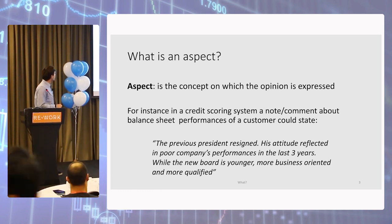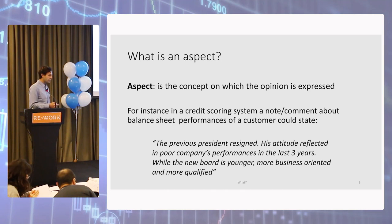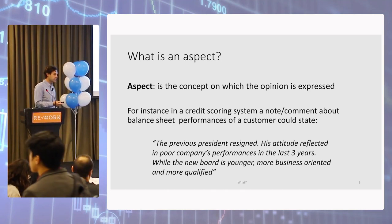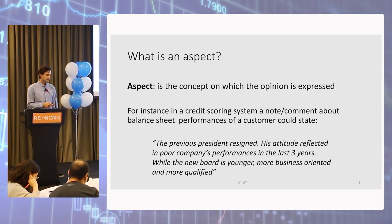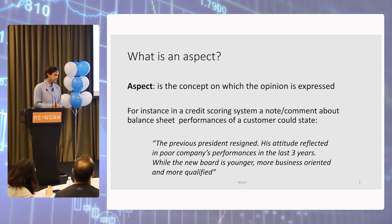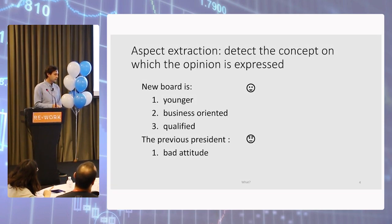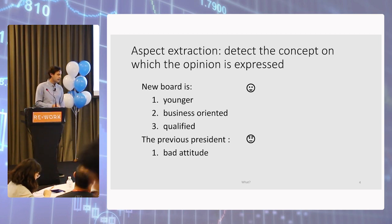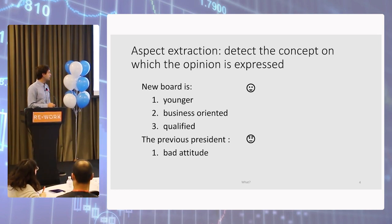In opinion mining, an aspect is a concept on which an opinion is expressed. For example, in a statement like 'the previous president resigned and his attitude reflected in poor company performance in the last three years, while the new board is younger, much more business oriented, more qualified,' we can extract two aspects. One is the new board, on which we have a positive sentiment, and one is the previous president, on which we had negative sentiment. Aspect extraction is just the task of detecting those concepts inside a sentence.